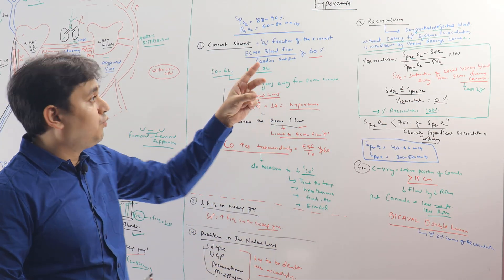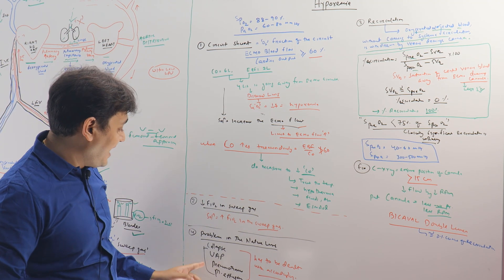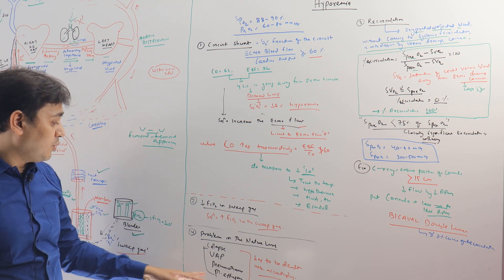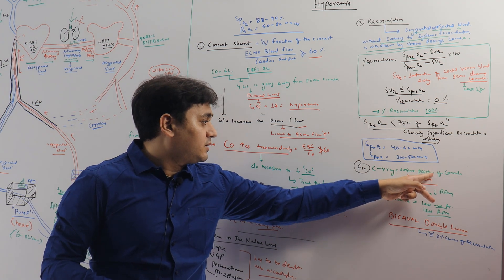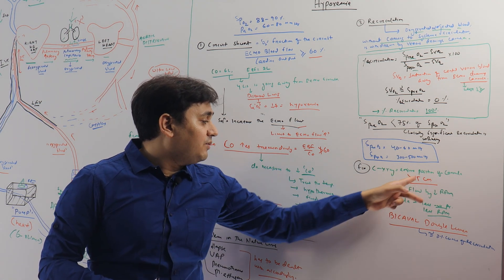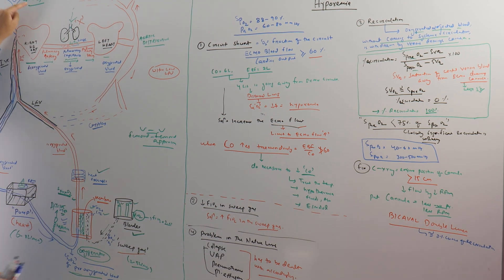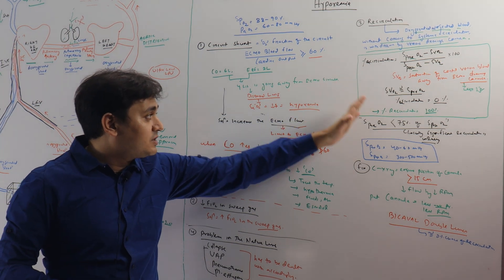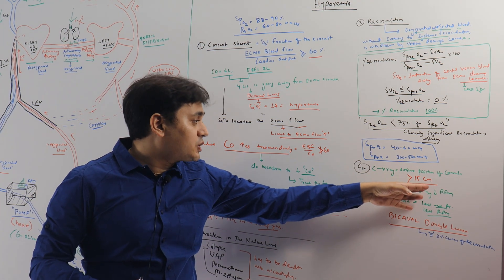The algorithm for hypoxemia: first, do a chest X-ray. It will reveal immediately reversible conditions like collapse, pneumothorax, or pleural effusion that can be treated right away. The chest X-ray will also show cannula positions — if the cannulas are less than 15 centimeters apart, you can reposition them. To calculate recirculation, take three ABG samples: one from the left IJV, one from the pre-oxygenator blood, and one from the post-oxygenator blood.